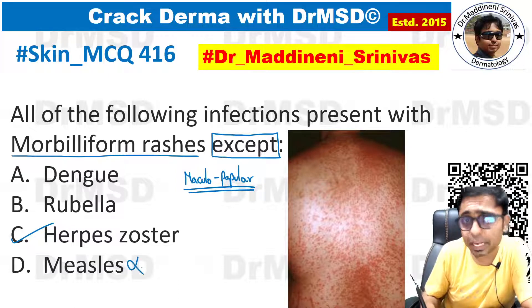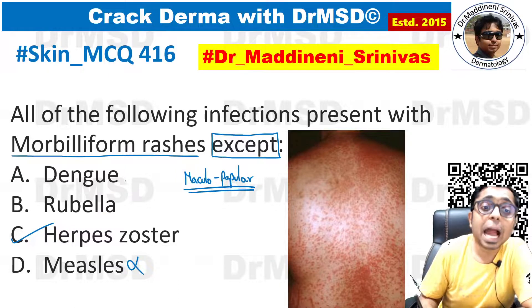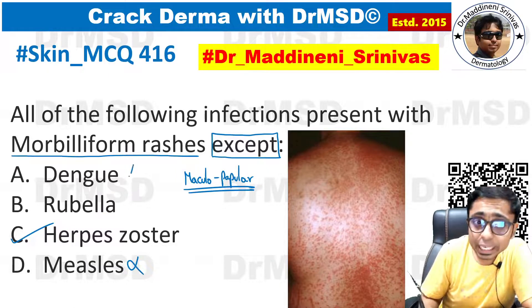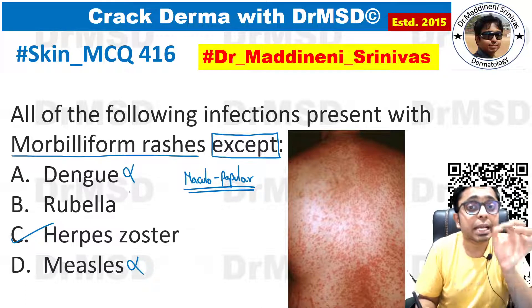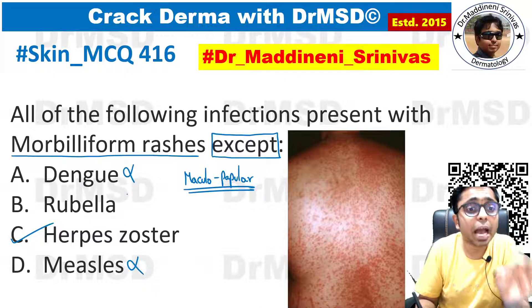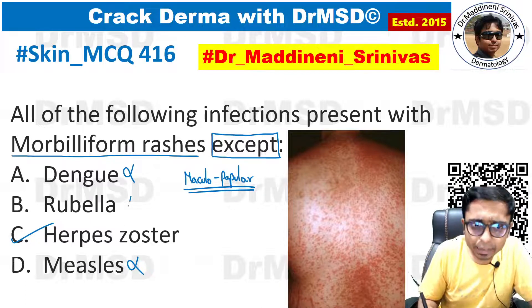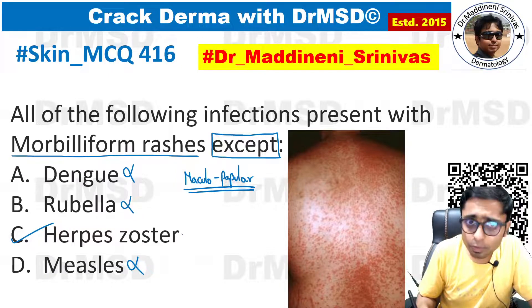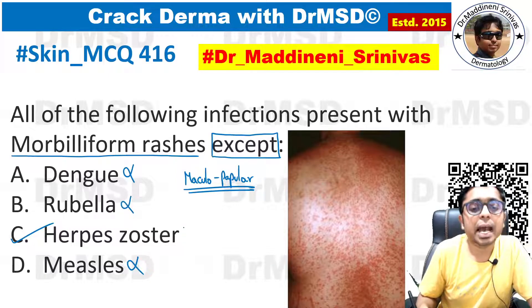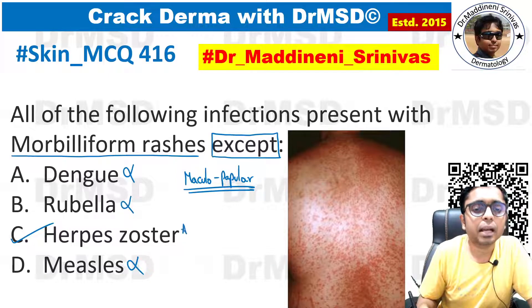We can rule out option C, and yes, dengue — which is caused by flavivirus — can also have a morbilliform rash. Even rubella can have a morbilliform rash. But herpes zoster, as most students have marked, is caused by varicella zoster virus — that is the first point to remember.